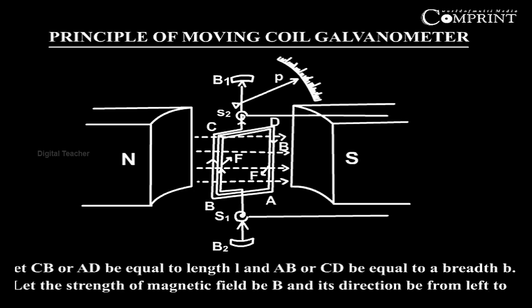Let CB or AD be equal to length L and AB or CD be equal to breadth B. Let the strength of magnetic field be B and its direction be from left to right in the plane of the paper, north to south.